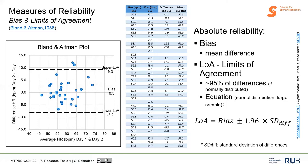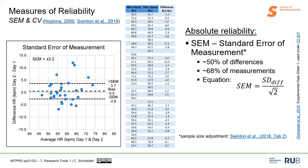The most important concept we discuss today is the standard error of measurement (SEM). Compared to limits of agreement, the range of the SEM is smaller — in this case, 3 bpm. The SEM tells us that approximately 50% of differences fall within that range — not 90%, but 50% of differences are within ±3 bpm. More precisely, if I measure heart rate once per day with an SEM of 3 bpm, heart rate typically varies by ±3 bpm on any given day.